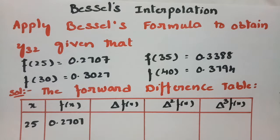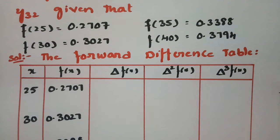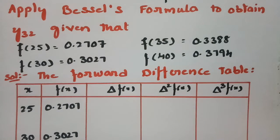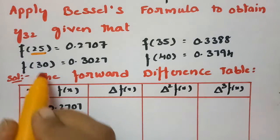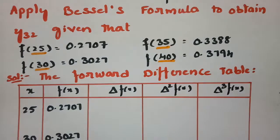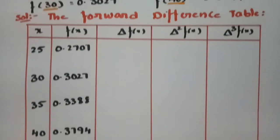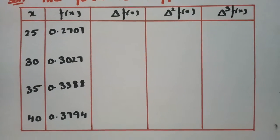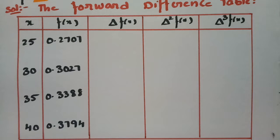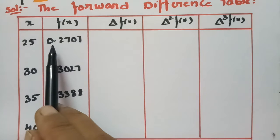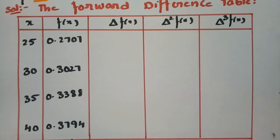First of all, I have to frame the forward difference table. The x values are 25, 30, 35, and 40. I have plotted them here, and the corresponding y values are given alongside.